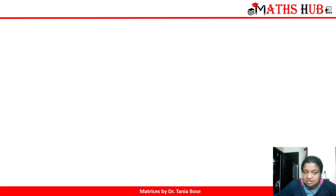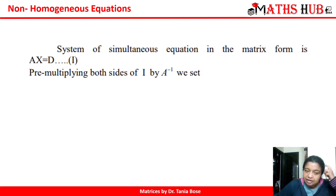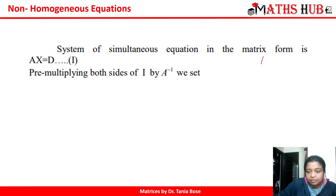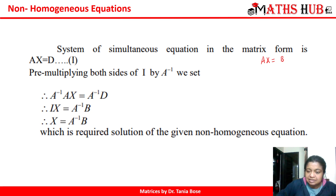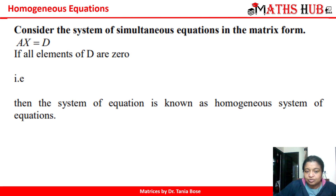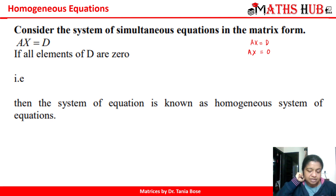Now let us move from a non-homogeneous system to a homogeneous system of equations. Once we know the system has a solution, to find it we multiply both sides of AX = D by A-inverse, giving X = A-inverse times D. In a homogeneous system, D becomes zero, so the equation becomes AX = 0. All equations are equated to zero: a1x + b1y + c1z = 0, a2x + b2y + c2z = 0, a3x + b3y + c3z = 0. That system is called a homogeneous system of equations.